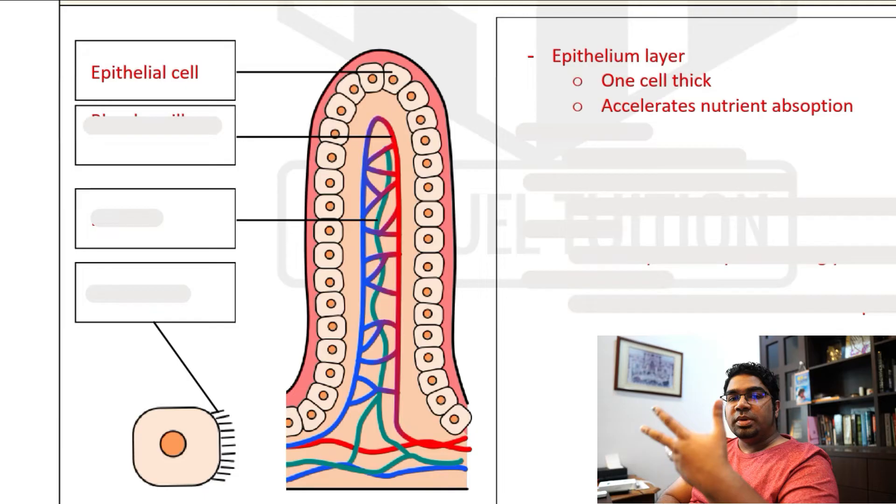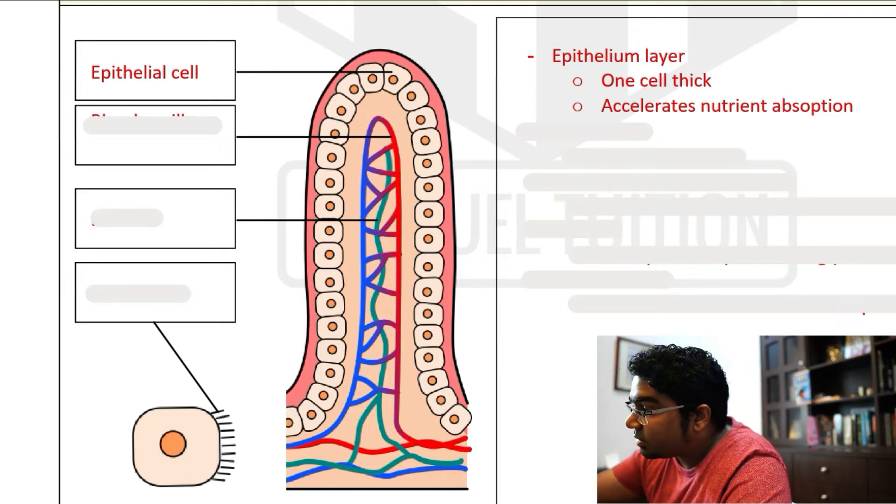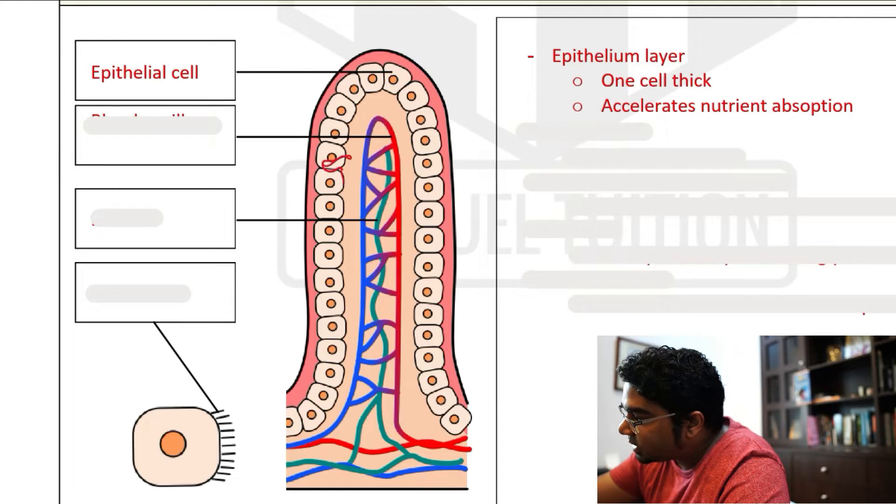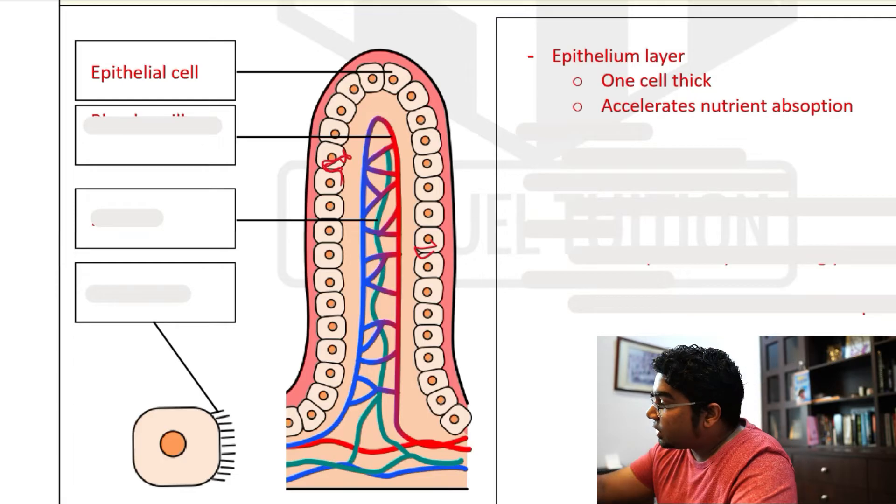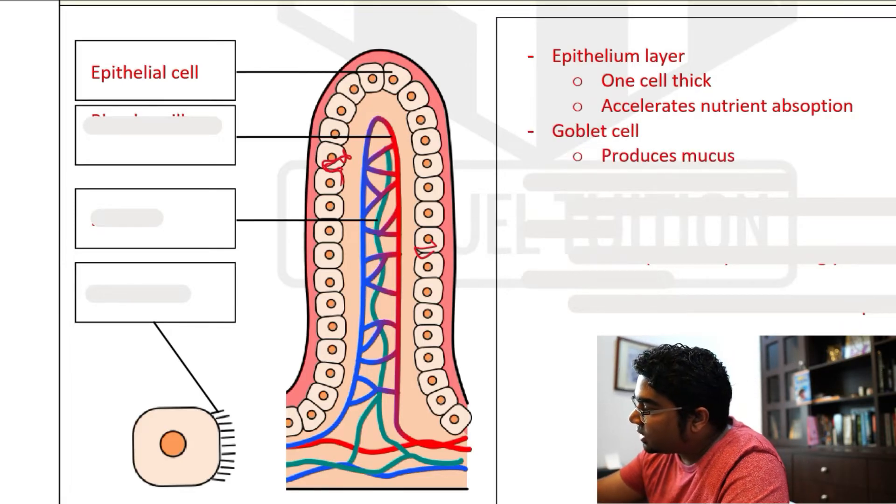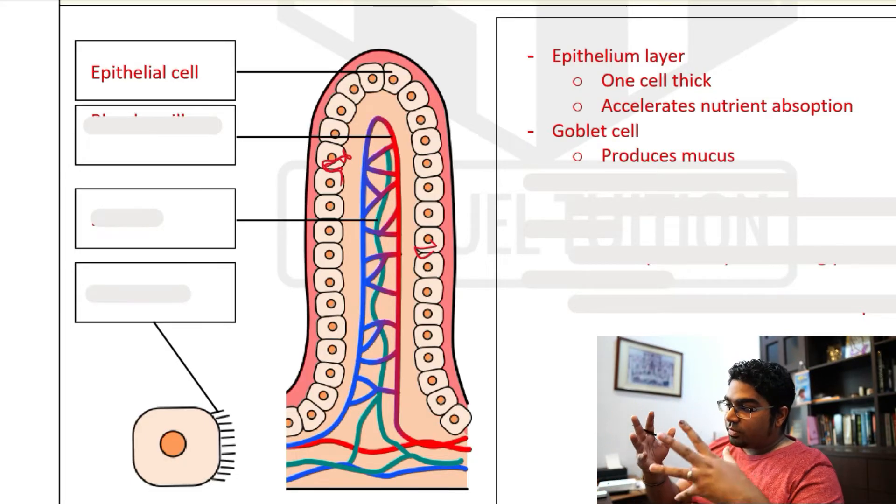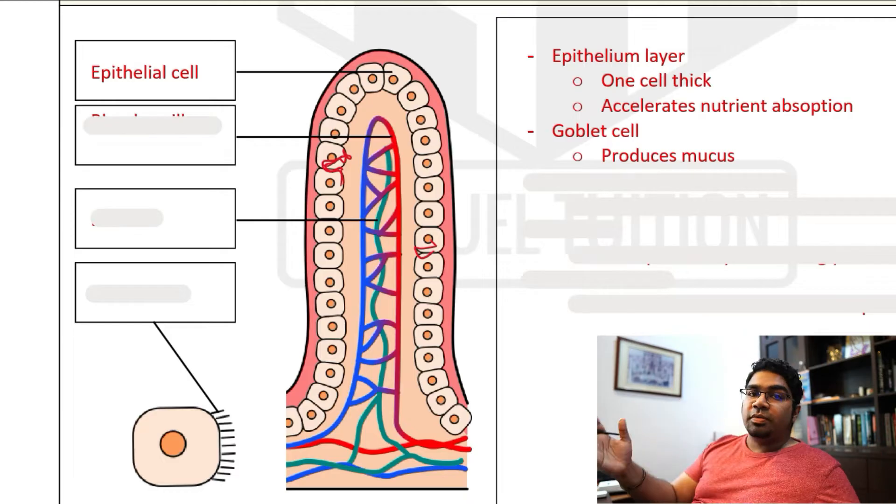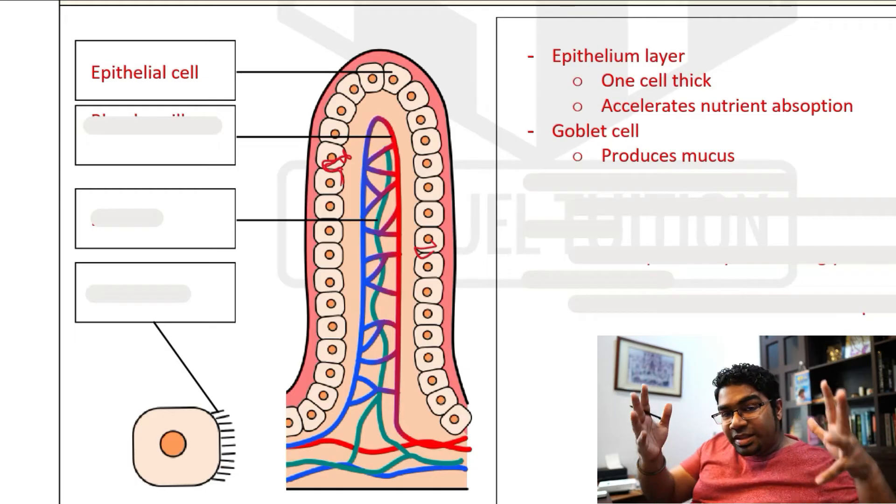And so it helps with absorption. Then we will also realize that we have a goblet cell. In between all these epithelial cells, we have some goblet cells. And the function of the goblet cell is to secrete mucus. This mucus actually helps with the digestion of food. It helps with the breakdown of food and the moving around of food and the nutrients within the ileum itself.